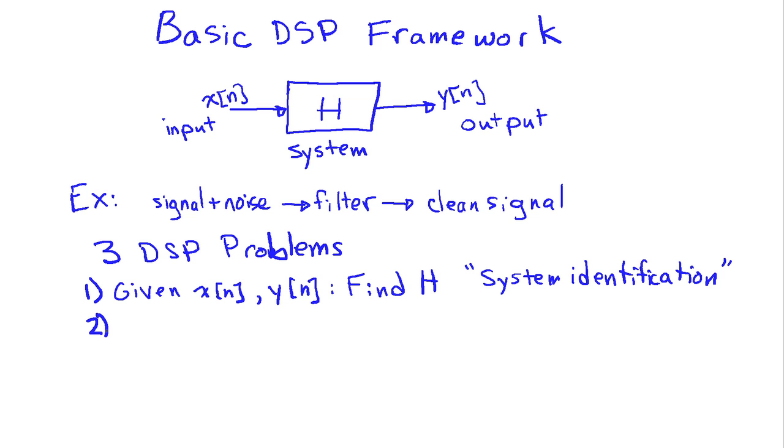So a second example, or a second problem that arises within this framework is let's suppose we're given x of n and H. Then what we want to do is compute or find y of n. And this is often referred to as filtering. And in fact, the example I just mentioned a minute ago where we have a noisy signal and then we apply a filter to it to get a clean signal. In that case I know the input, it's my signal and my noise. I know what the system is, some filter I've designed to get rid of noise, and I just need to find out what is the output. So there we know the two things on the left, the input and we know the system, we just don't know what the output is over here on the right.